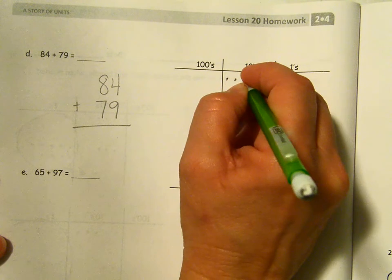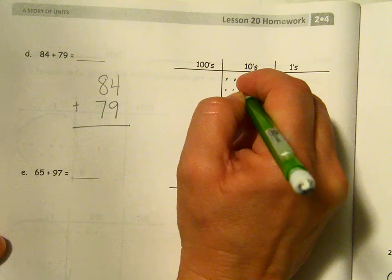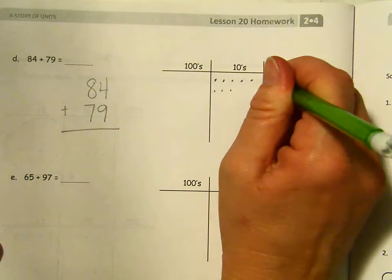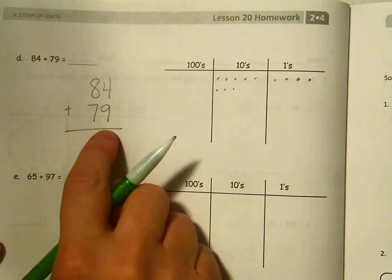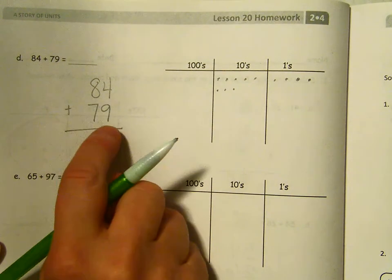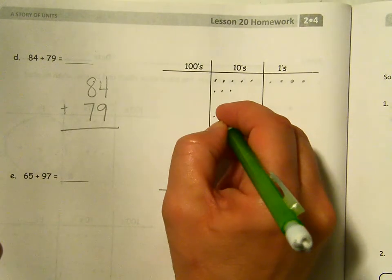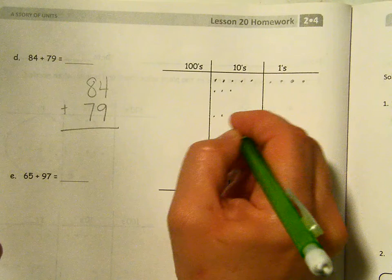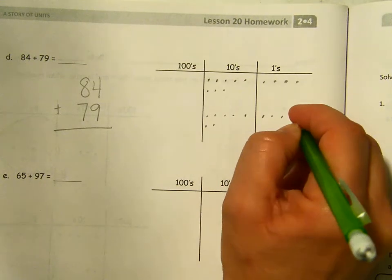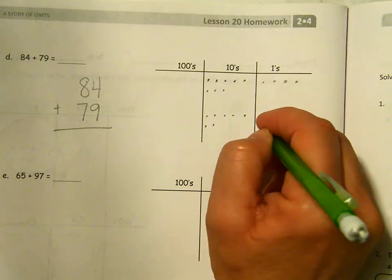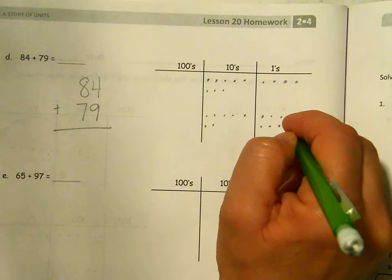84 has eight 10s and four ones. So 10, 20, 30, 40, 50, 60, 70, 80, and four ones. One, two, three, four. So I have 84. Now 79 has seven 10s and nine ones. 10, 20, 30, 40, 50, 60, 70, 71, 72, 73, 74, 75, 76, 77, 78, 79.